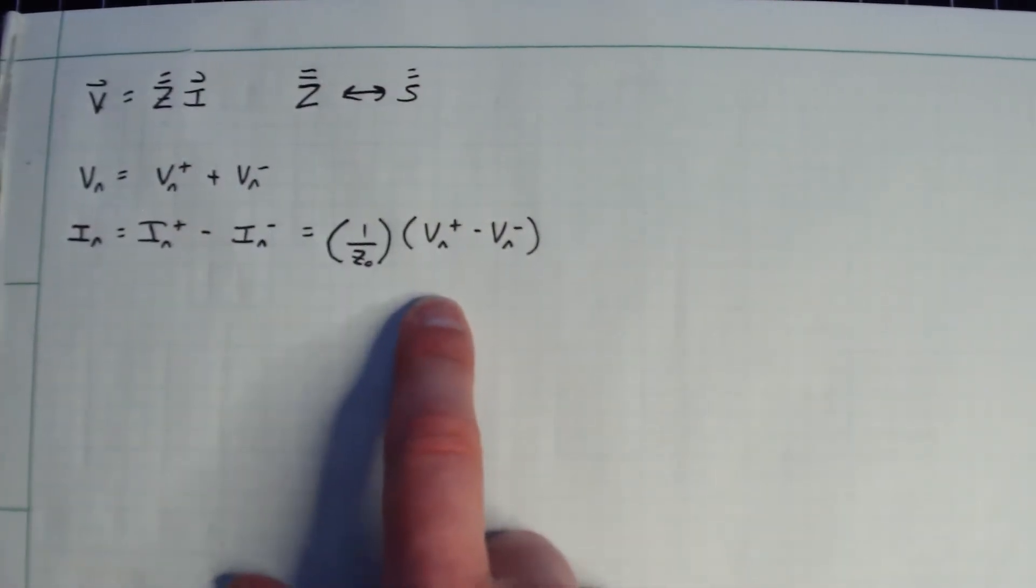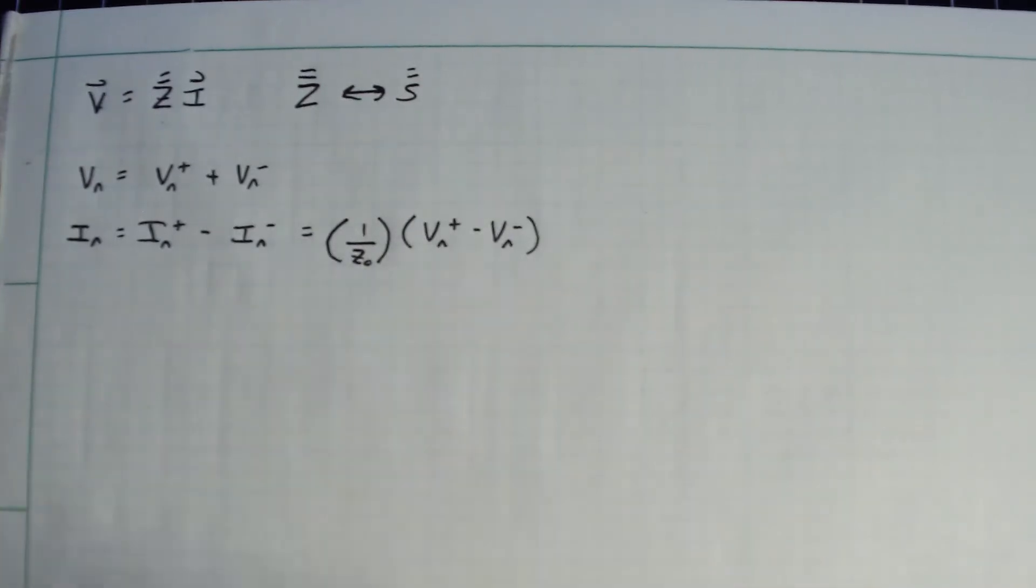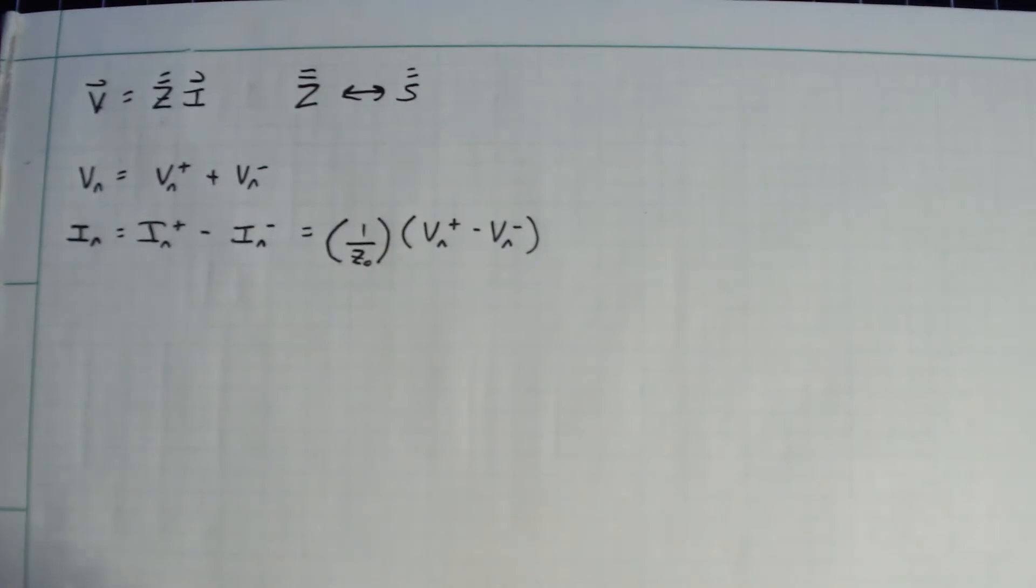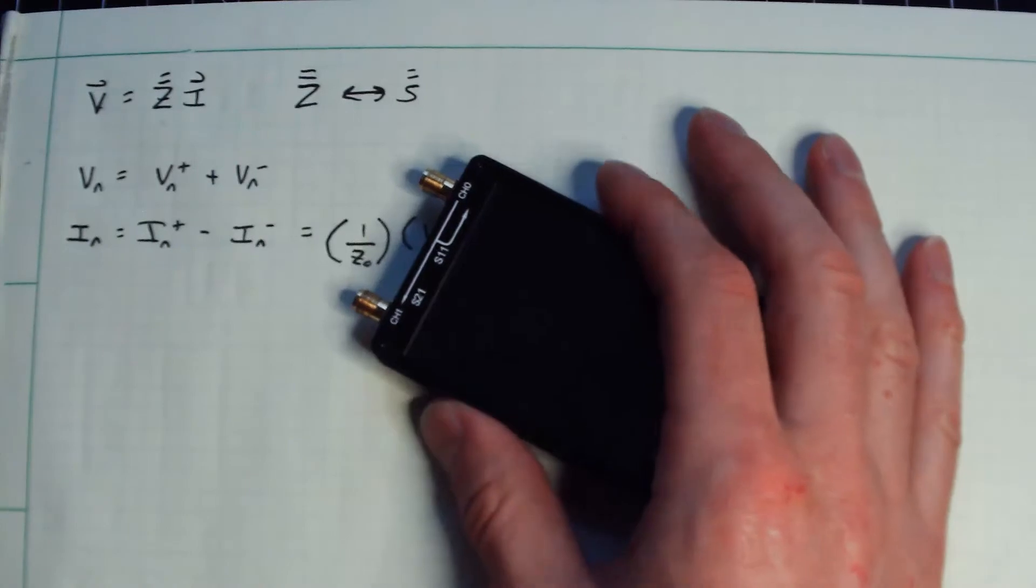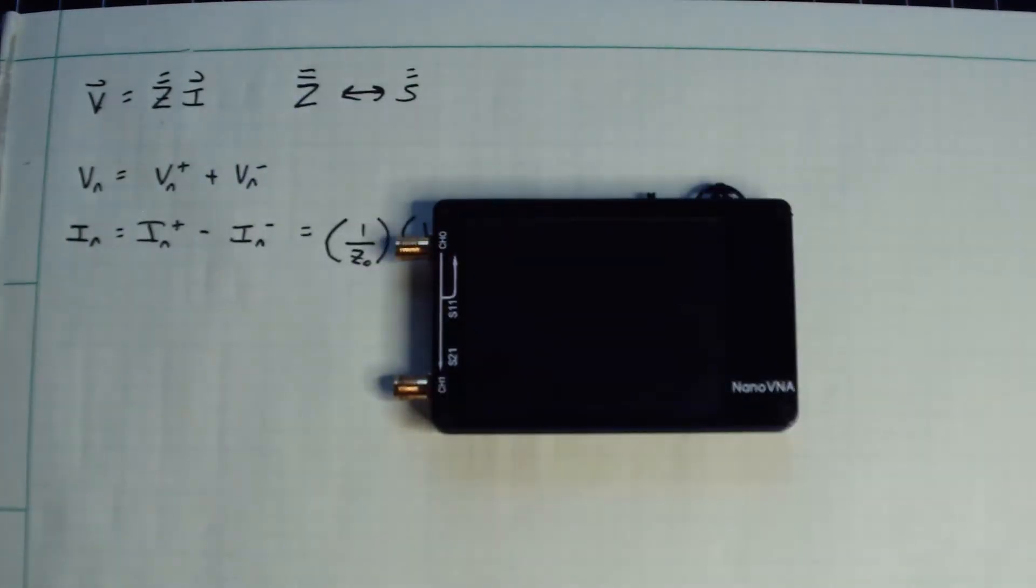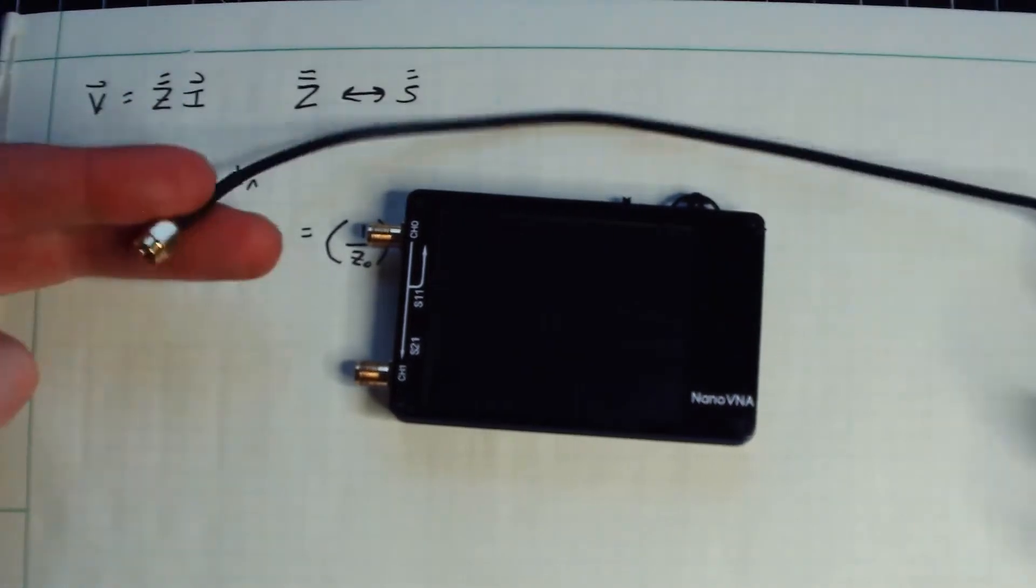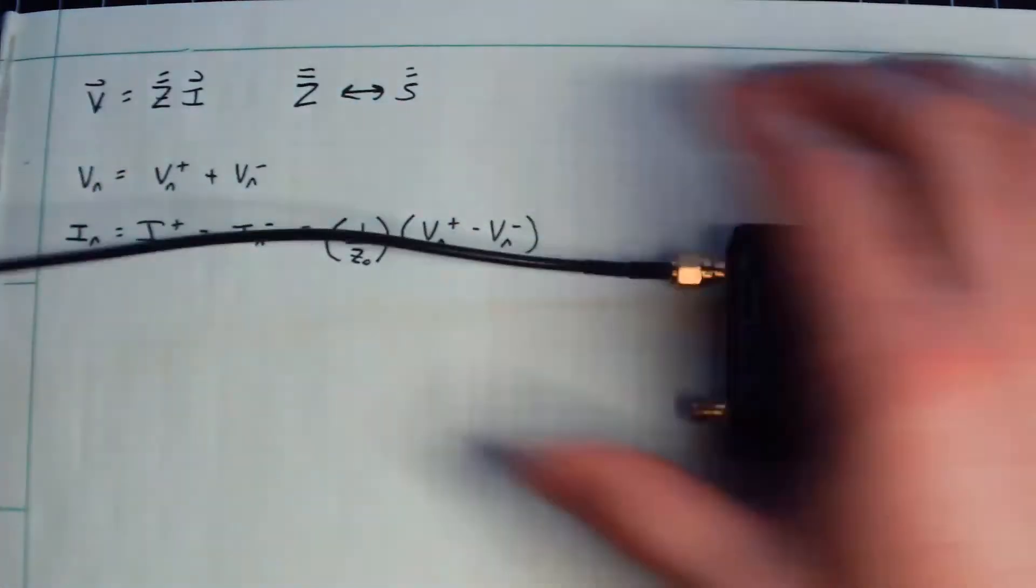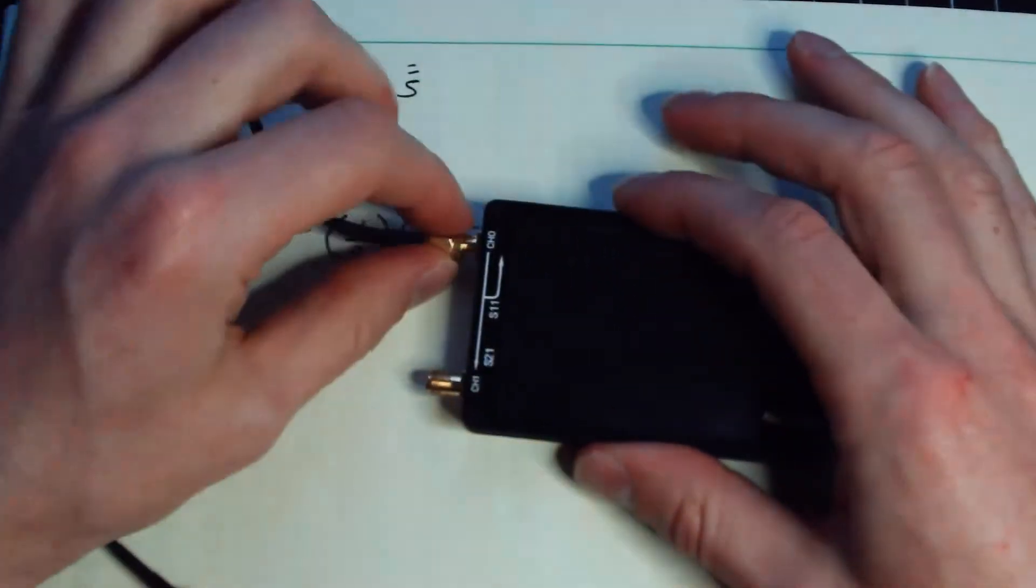So I'm going to write 1 over Z naught times V sub n plus minus V sub n minus. Now for the sake of this argument, I'm going to assume that all of my transmission lines, which feed some particular microwave network, have the exact same characteristic impedance. And that may sound like a strange assumption, but it's really not, right? So again, imagine this is some black box microwave network, and I have to feed it with a cable. And I would take this and plug it into here. And I know that this cable has an impedance, a characteristic impedance of 50 ohms.